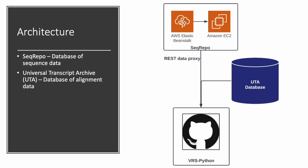Let's briefly talk about the overall architecture required to use our VRS annotation script. SeqRepo and the Universal Transcript Archive, or UTA, are both databases found within the BioCommons package on GitHub. SeqRepo provides access to sequence data, while UTA provides access to alignment data. These two resources are crucial for the normalization and translation of variants into their VRS representations through the VRS Python package.